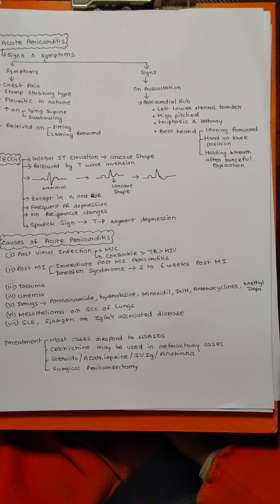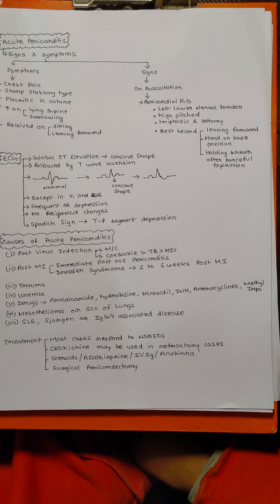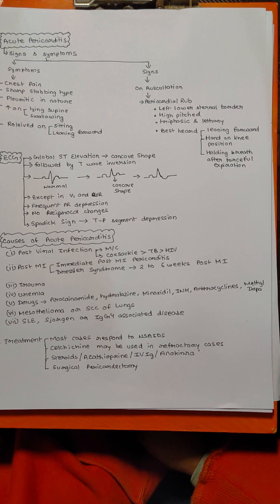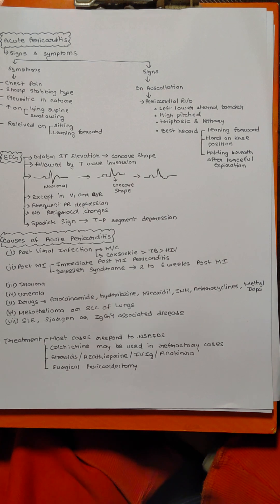There is also another sign known as Spodick sign, which is a TP segment depression. What exactly are the causes of acute pericarditis? The most common cause is post-viral infection, and the most important virus that causes post-viral myocarditis is Coxsackie virus.